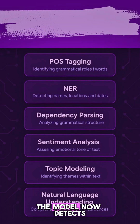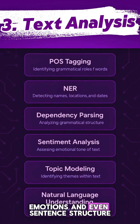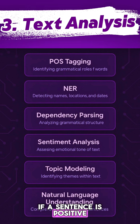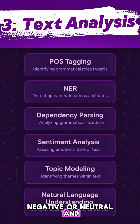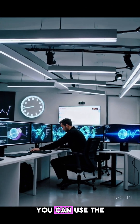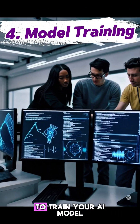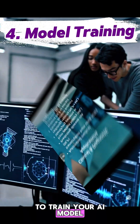The model now detects grammar, names, emotions, and even sentence structure. It can figure out if a sentence is positive, negative, or neutral, and what the topic is all about. Finally, you can use the clean and structured data to train your AI model.